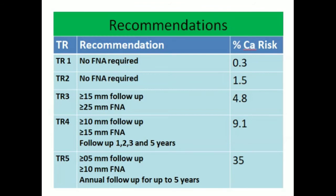Regarding recommendations: if a lesion is classified as TR1, no FNA is required as the risk of malignancy is 0.3%. For TR2, no FNA is required and the risk of malignancy is 1.5%. For TR3, the size is considered — if up to 15 millimeters, follow-up is recommended; if more than 25 millimeters, FNA is recommended. TR3 lesions carry a risk of malignancy of 4.8%.